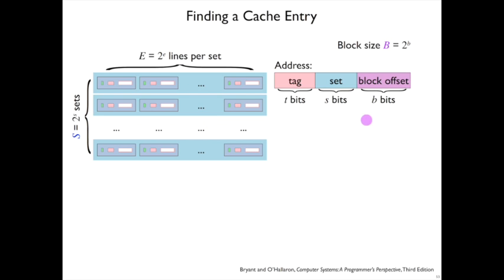So now we have a refined process for looking up an entry in the cache. The bottom B bits are still going to be some offset within a particular cache line's block. But the next set of S bits corresponds to which set we should look in. So we take those bits and use it to index the horizontal rows here.